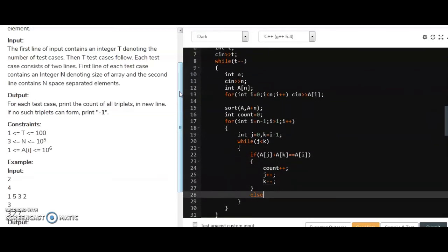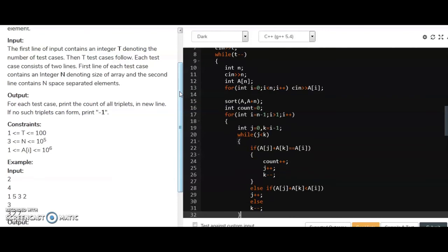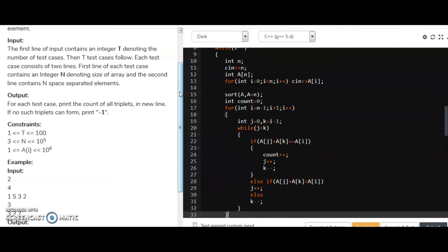Now else if A of j plus A of k is less than A of i, so I will just increment the j. Else I will just decrement the k. And that's all.